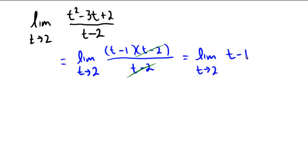So initially, 2 was the problem, because it caused a clear 0 in the denominator, and not as clear, but also a 0 in the numerator. But after reducing them, now we have an expression that does not have t minus 2 in the denominator. So here we can literally just plug in t for 2.